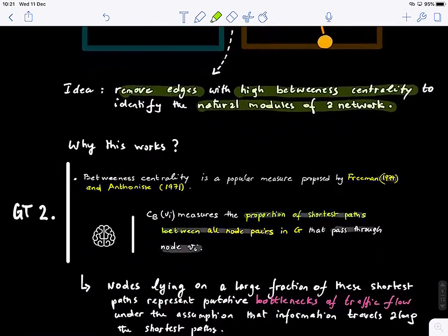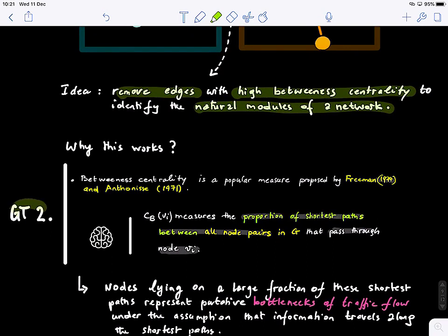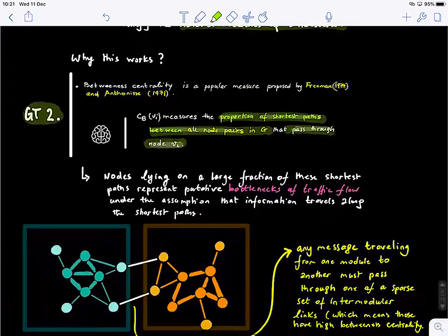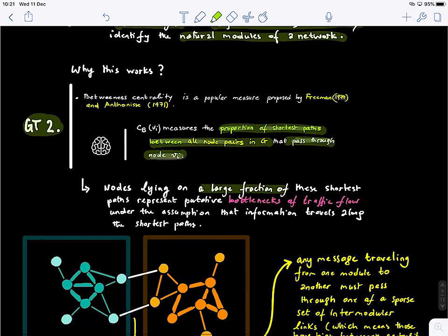So why this works: if you guys remember what is betweenness centrality, this is from a graph theory lecture too, so we looked at this before. So it measures the proportion of shortest paths between all node pairs in G that pass through node via I, or we can also generalize it to edges.